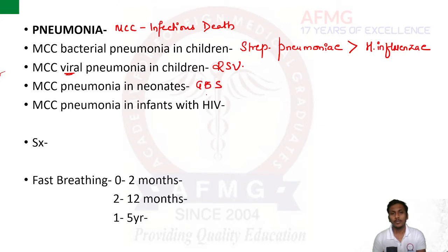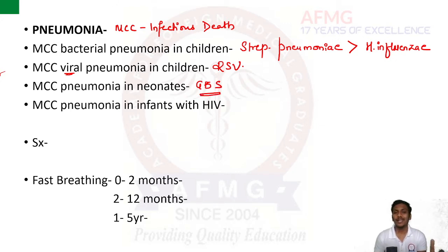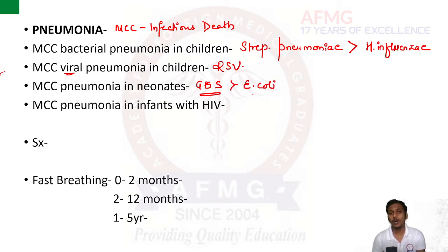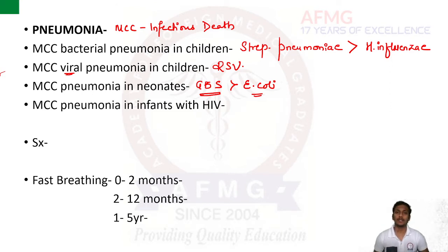The most common cause of pneumonia in neonates is Group B Streptococcus, followed by E. coli. Please remember these are also the common organisms known to cause neonatal sepsis — the same organisms cause pneumonia as well as neonatal sepsis.